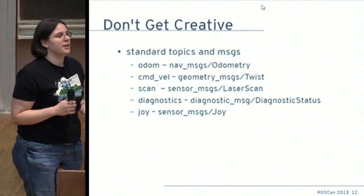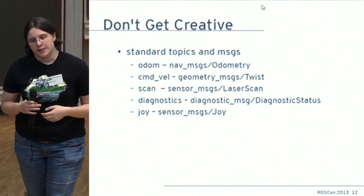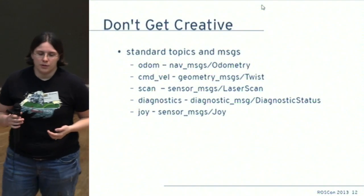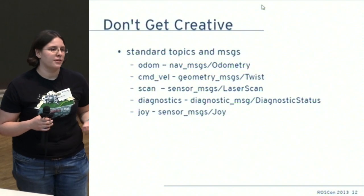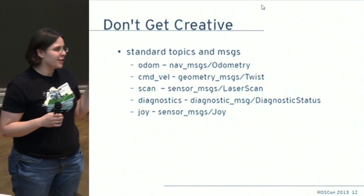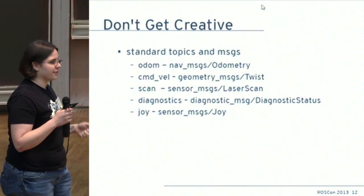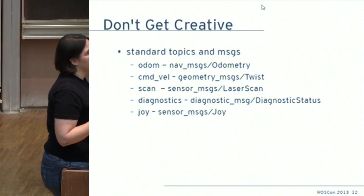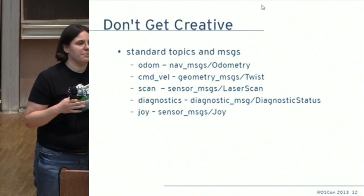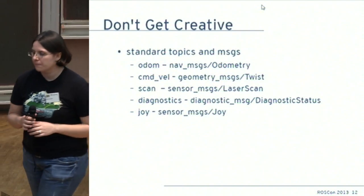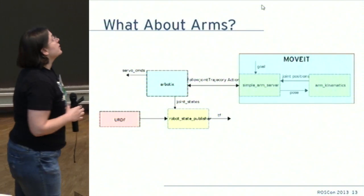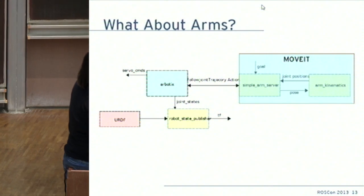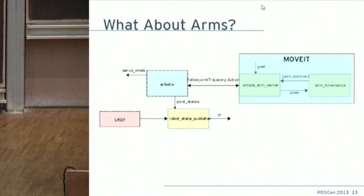Don't get creative with topic names and messages. The point of ROS is to be configurable and extendable, but it's also meant to be compatible. When you make robots, you want to share code, and if you start using creative names like some unusual metric frame, you're not leveraging compatibility with other people's software.